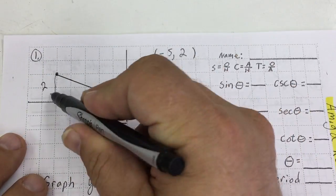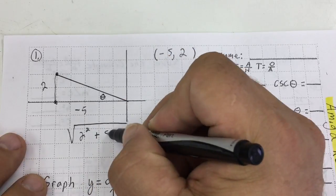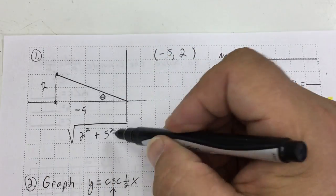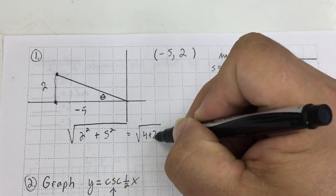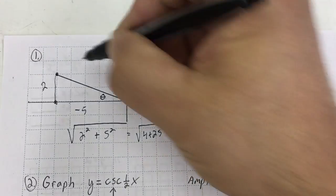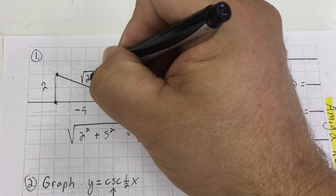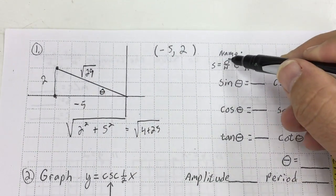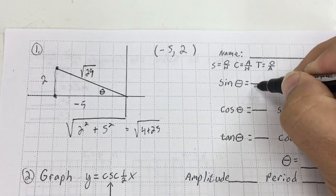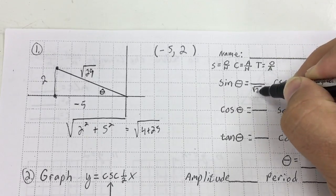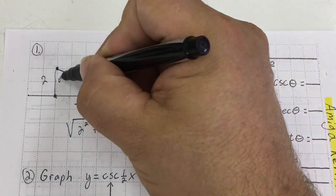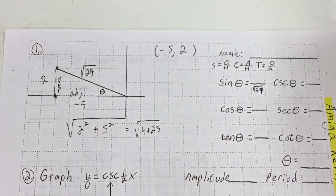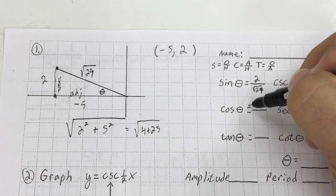It's going to be the square root of 2 squared plus 5 squared — the absolute value. That's going to give me the square root of 4 plus 25, which is the square root of 29. And that's going to be my hypotenuse. Sine equals opposite over hypotenuse, so the hypotenuse is root 29. The side opposite this angle is over here, and this will be the adjacent side.